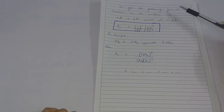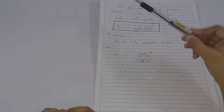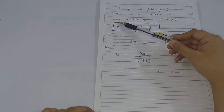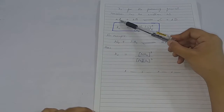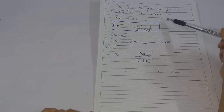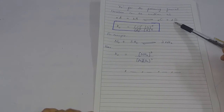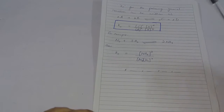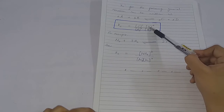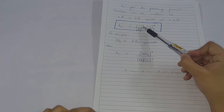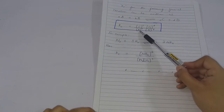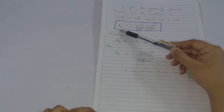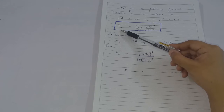Here is the general reaction for writing KC. In a general reversible reaction aA + bB ⇌ cC + dD, the small letters a, b, c, d are the coefficients. KC is written as [C]^c × [D]^d divided by [A]^a × [B]^b. The coefficients from the balanced equation become the powers of the molar concentrations.